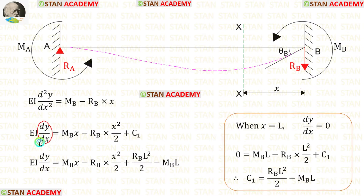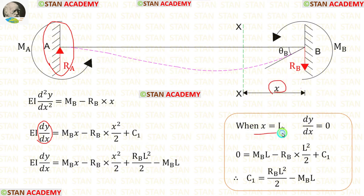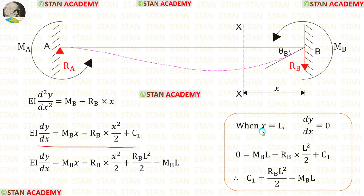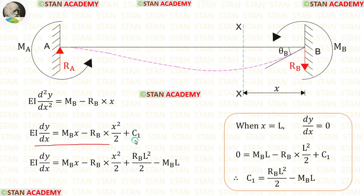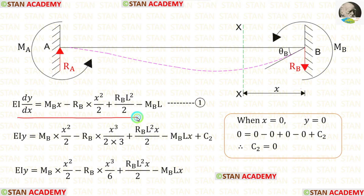We know that dy/dx is the slope. At point A there is a fixed support, and in a fixed support there is no rotation, so there will be no slope. Therefore, when X equals L, dy/dx equals 0. Applying X = L and dy/dx = 0 into the equation, we obtain C1. Substituting this value of C1 back into the equation, we have just made the slope equation.